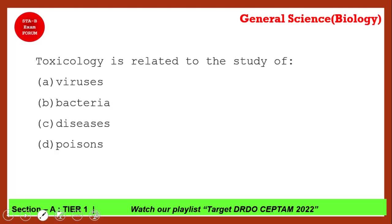Toxicology is the study of which of the following? The correct answer is option D — poison. You have heard the word 'toxic,' which means poison. So toxicology is the study of poisons.